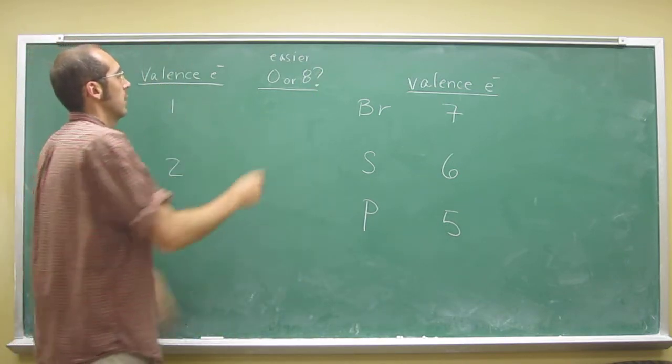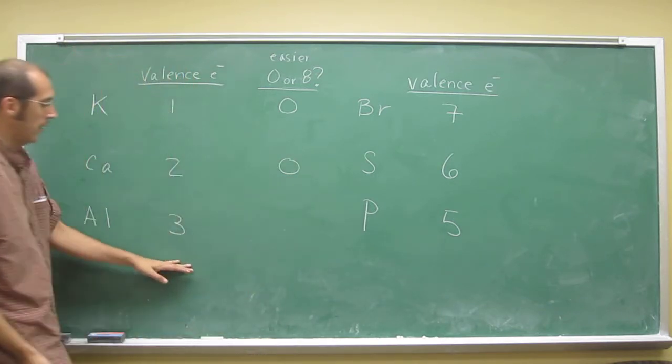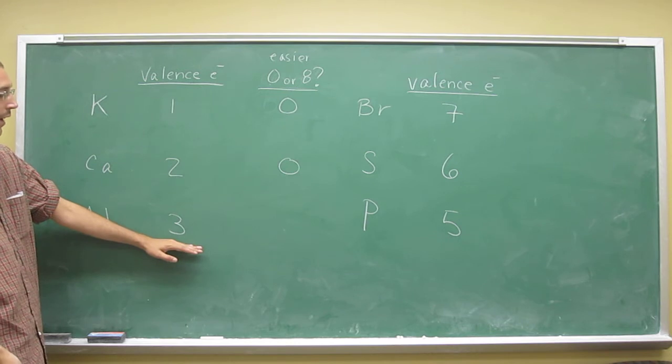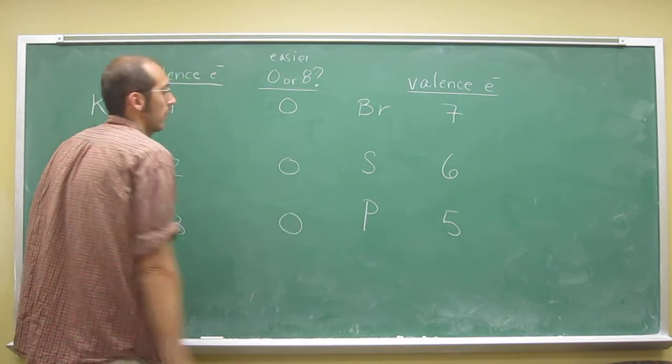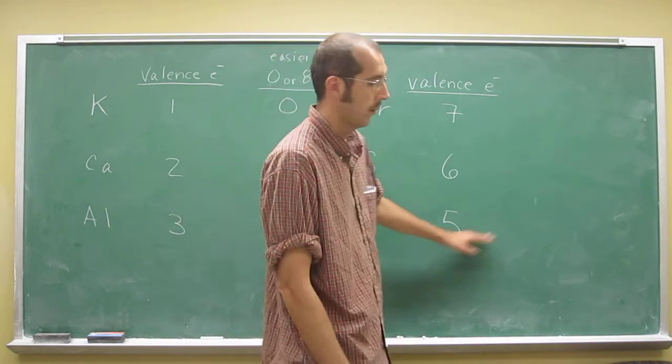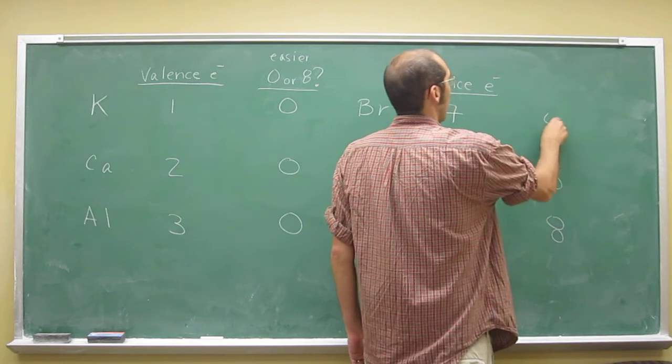So here, it's going to be zero, right? Here again, it's going to be zero, and here, well, it takes five to get to eight, or three to get to zero, so zero. Here, three to get to eight, so it's going to be eight, right? Eight and eight.